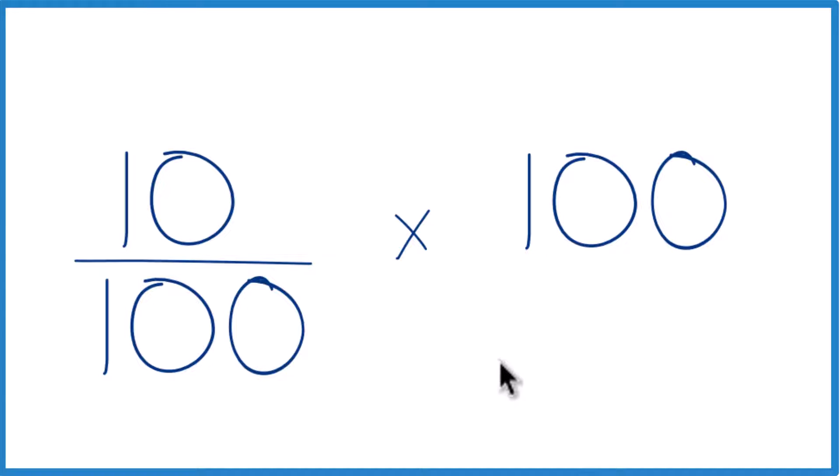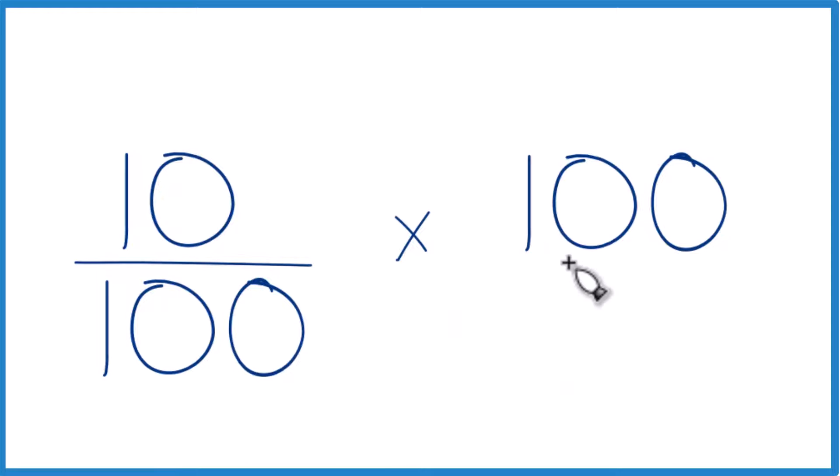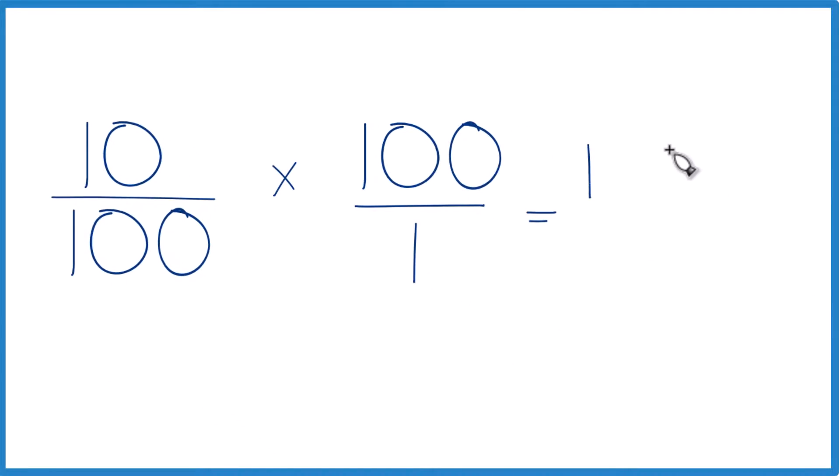The other way to do it, and it's a little more general, it works with different percents, not just 10%, is to think of this as 100 over 1. Because now 10 times 100, that's 1,000. And 100 times 1, that is 100. And 1,000 divided by 100, that's just 10 over 1, or 10.